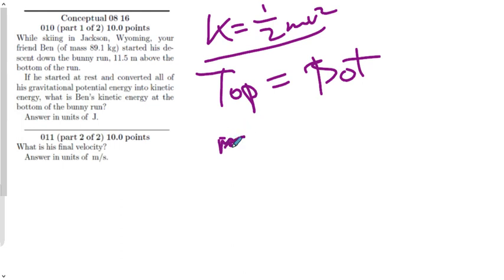So I have mgh, or I have only potential, and at the bottom I have only kinetic. So now I put my formulas underneath: mgh equals one half mv squared.